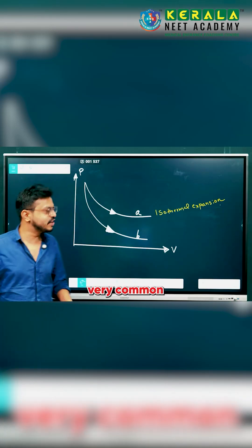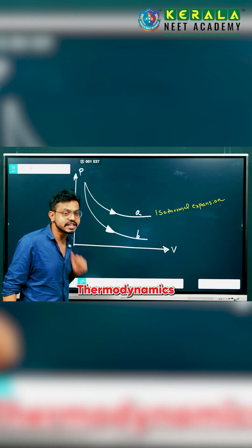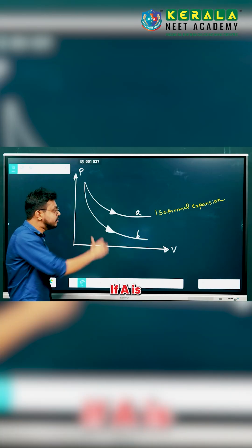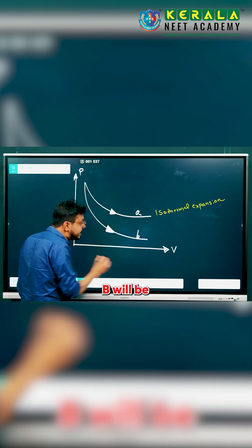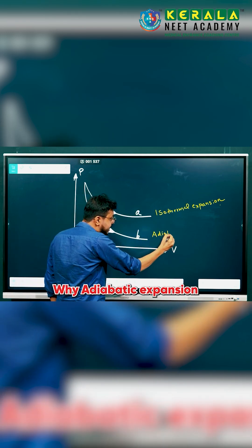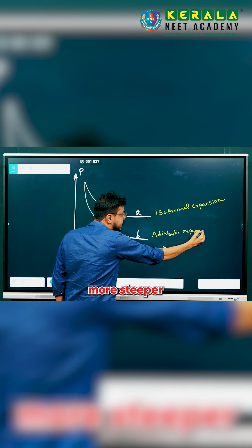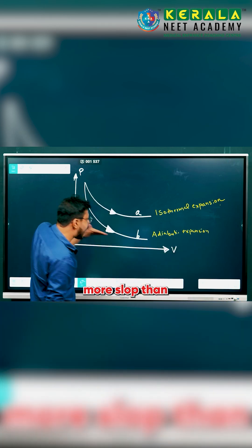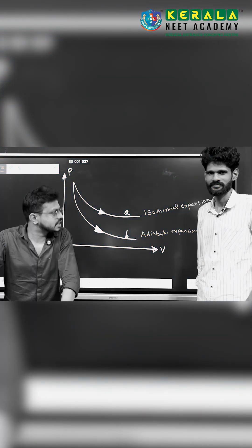Hello my dear friends and students. This is a very common question from the chapter. In a PV graph, if A is isothermal expansion, B will be adiabatic expansion. Why adiabatic expansion? The graph is more deeper, more sharp than isothermal expansion.